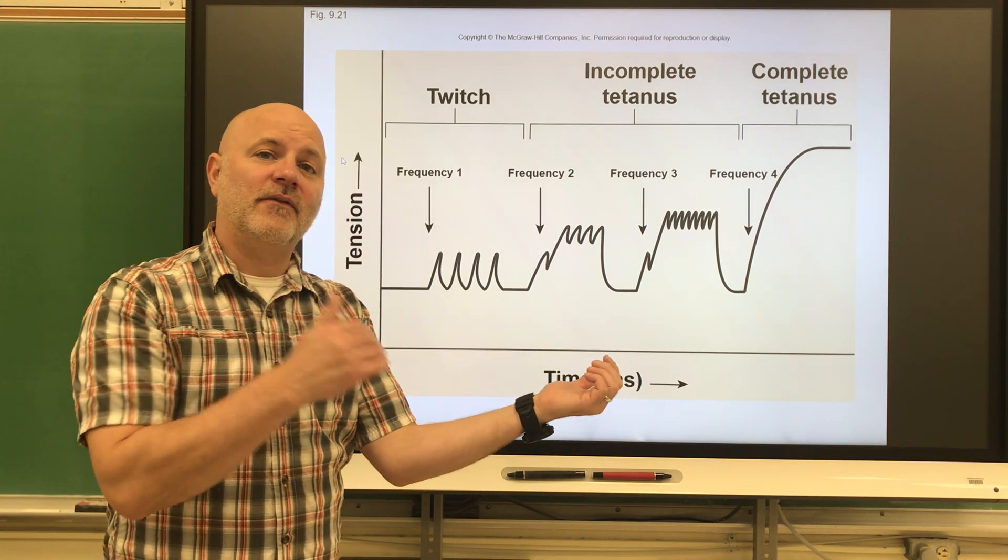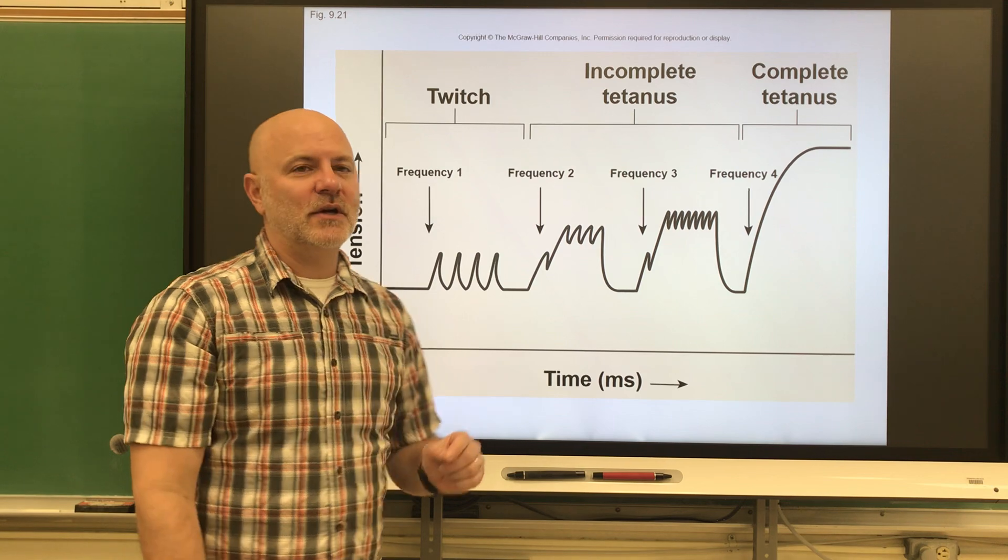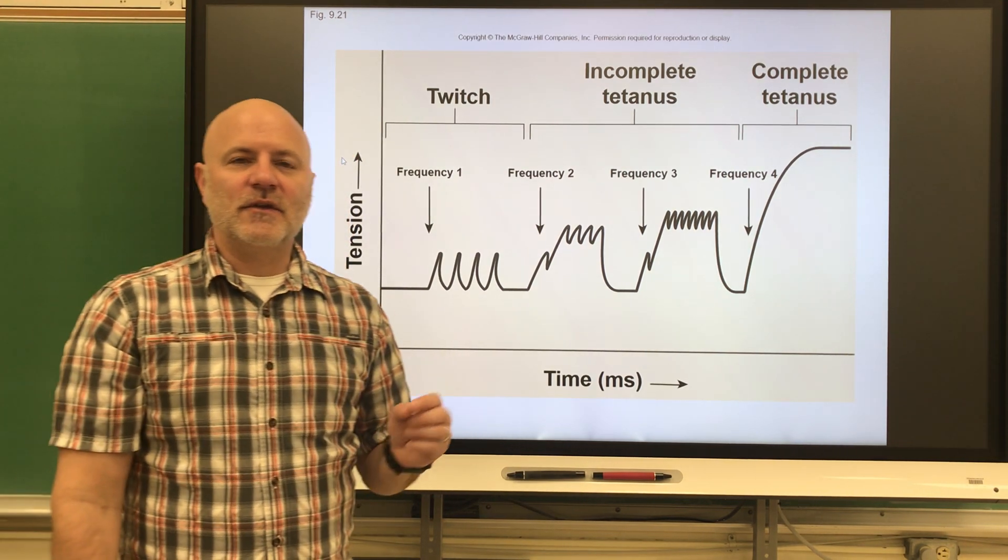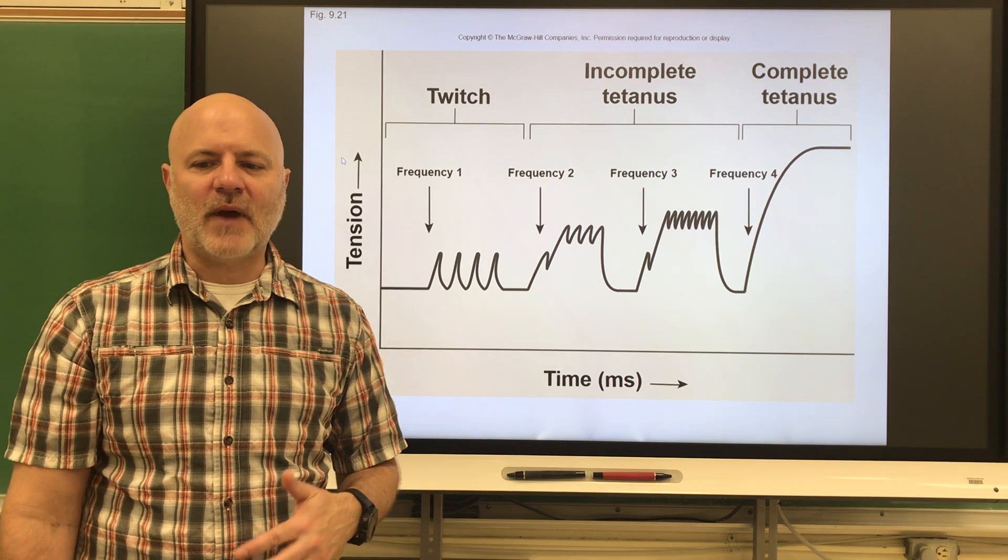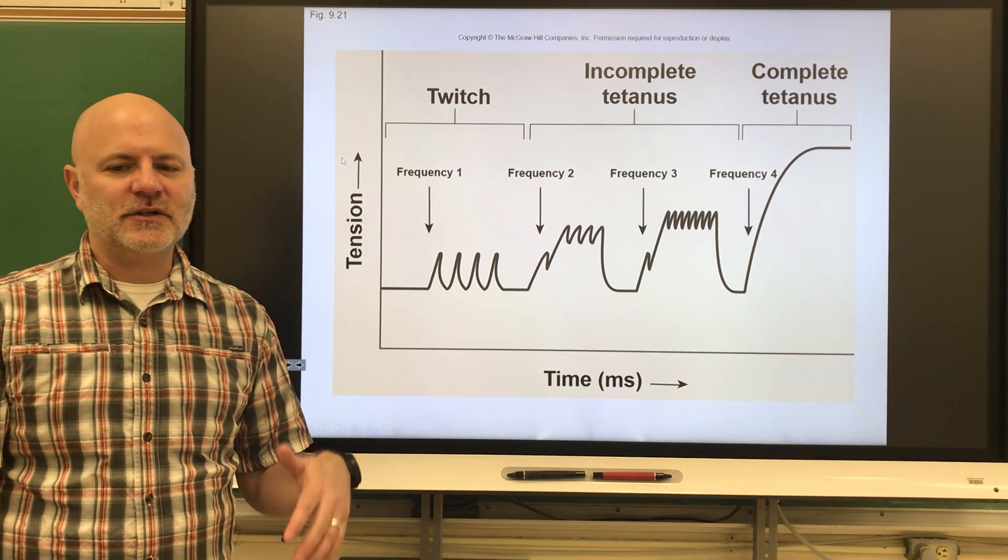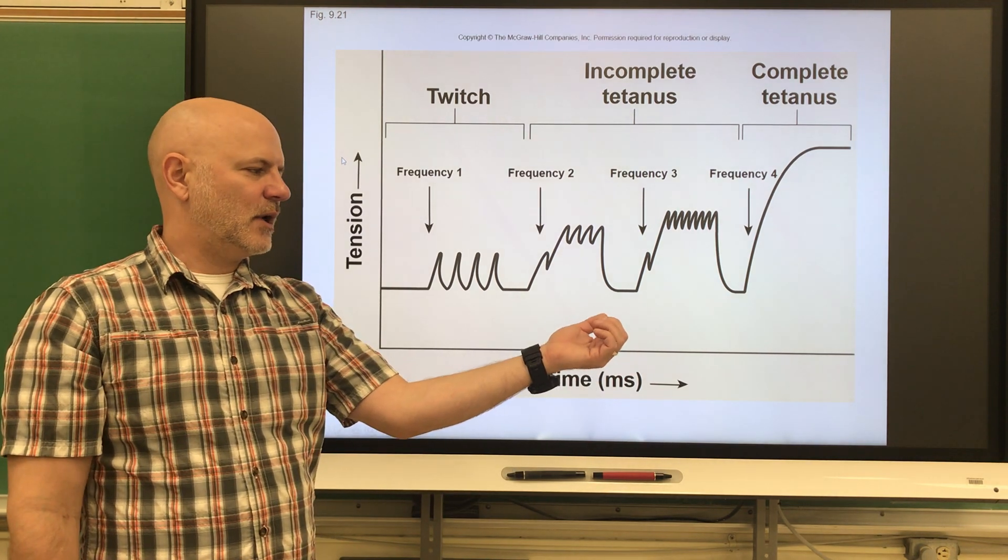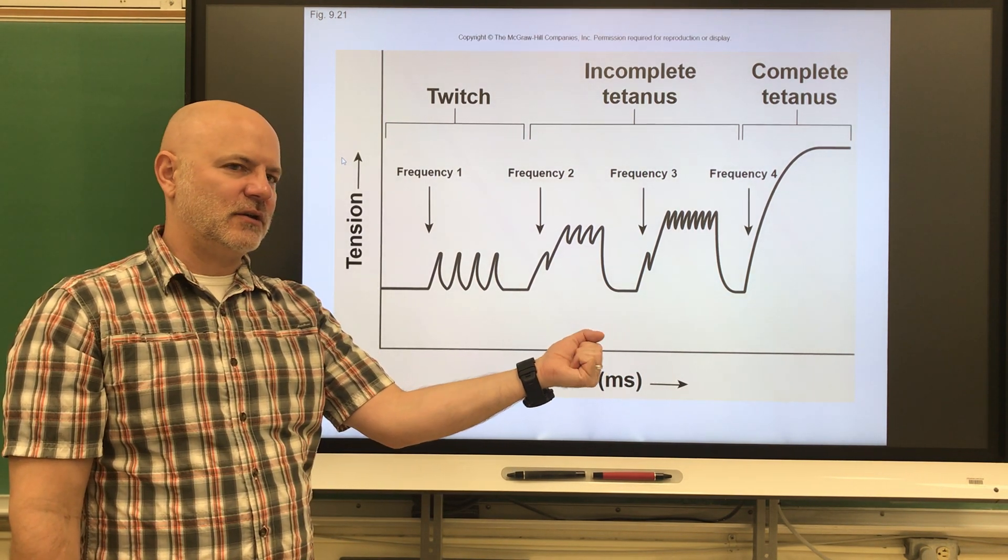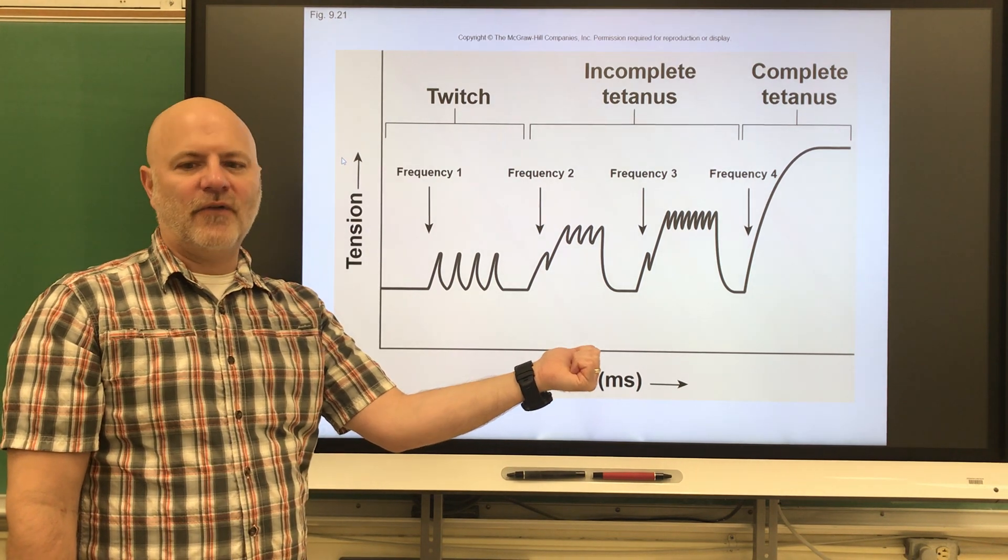Impulses to that muscle, we're going to get what is known as incomplete tetanus. This is accumulation of twitches where the twitches occur so rapidly that the next twitch occurs before the previous twitch fully relaxes. Instead of contraction, relaxation, contraction, relaxation, we would see this. We're not getting full relaxation.